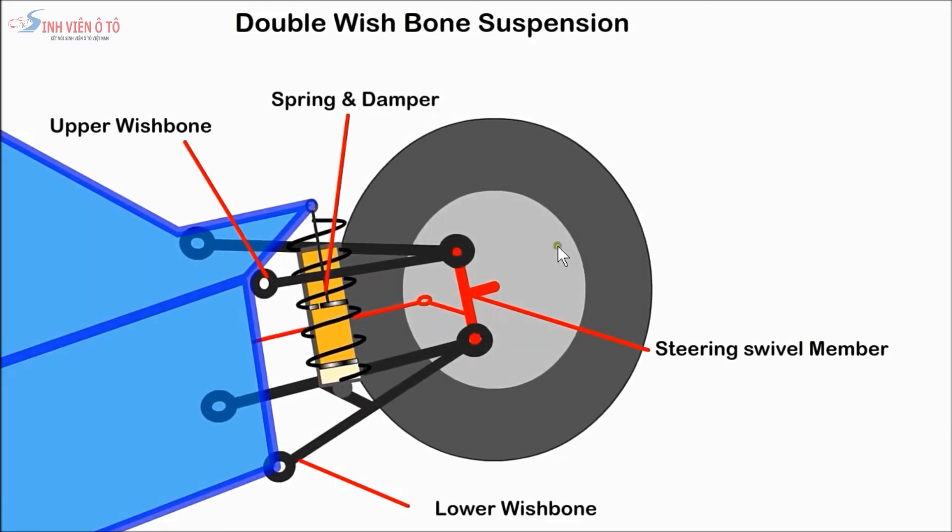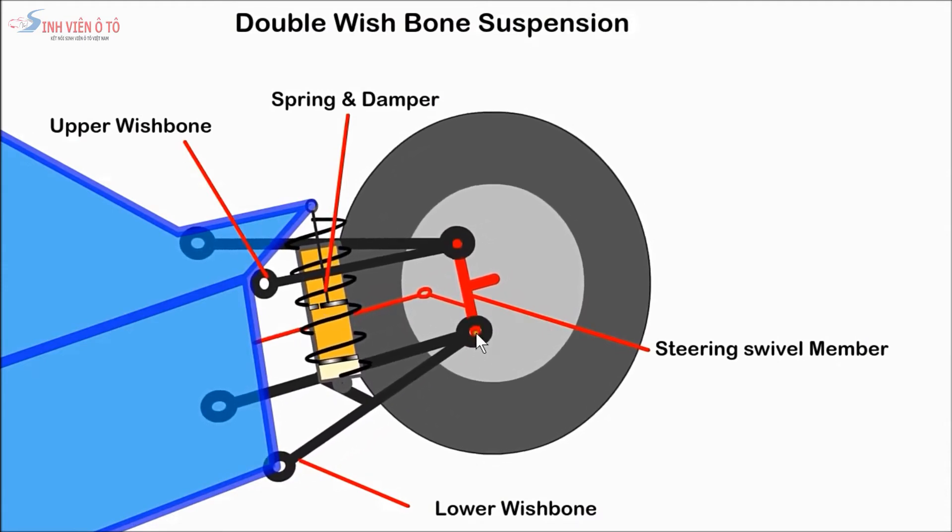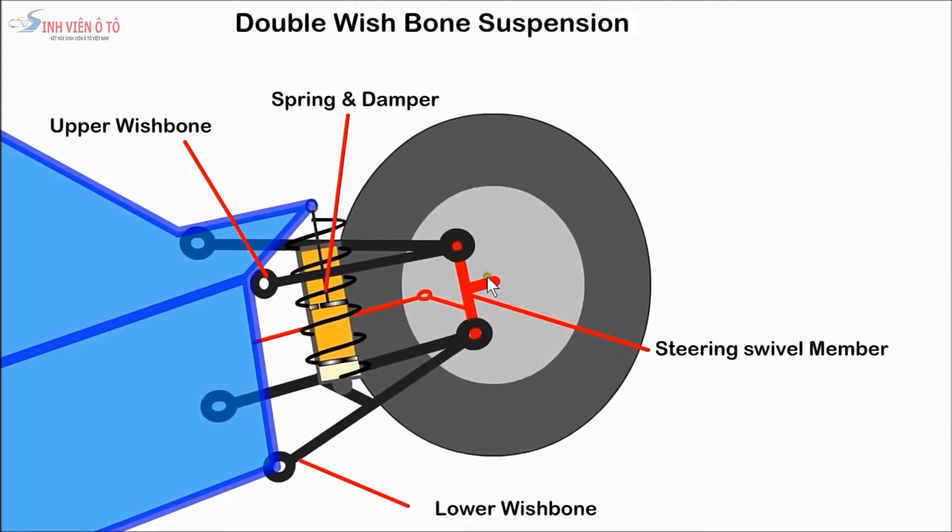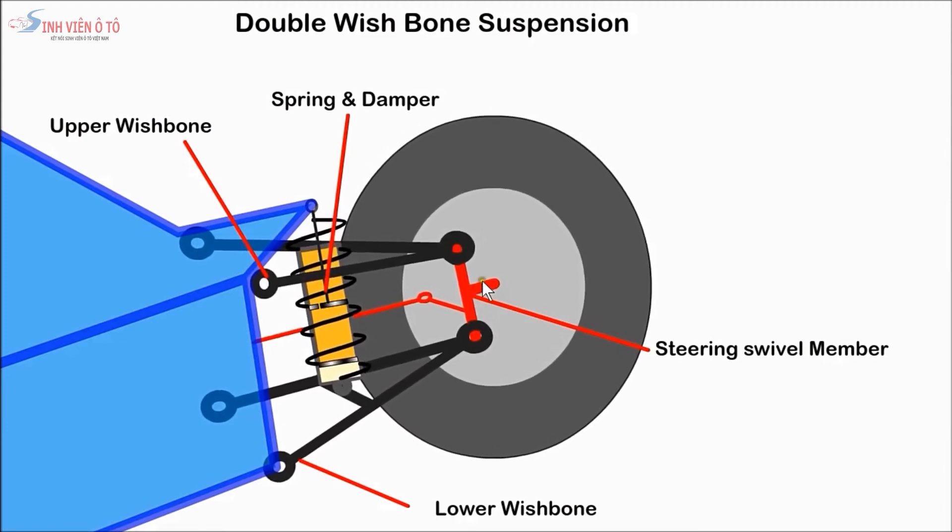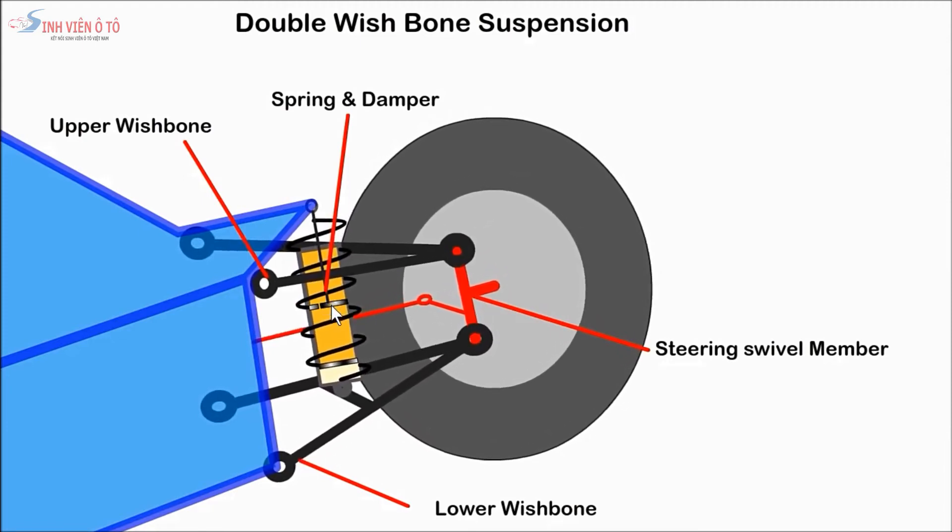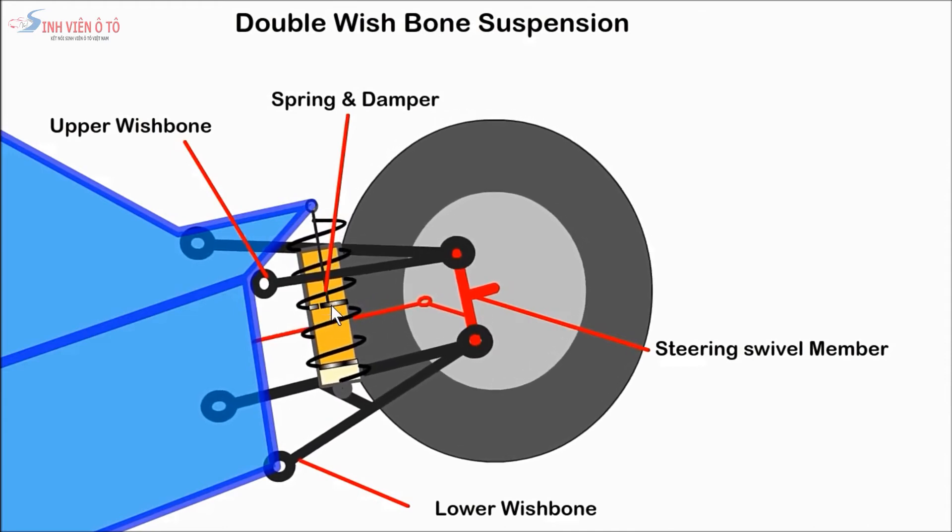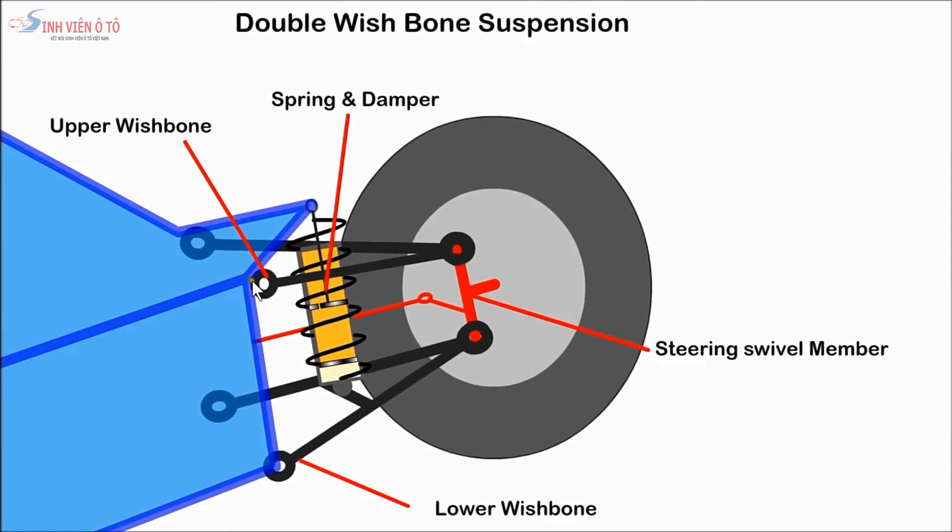A double wishbone suspension has two wishbone-shaped links attached to the car at the wide end. The narrow end is connected to swivel members which have the stub axle and wheel. The spring and damper are located between the lower member and the car structure. In most cars, the wishbones are not of equal length or parallel.